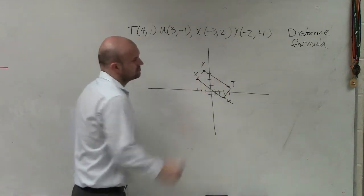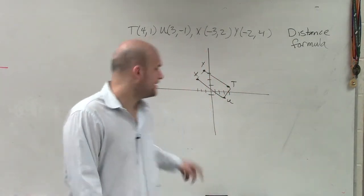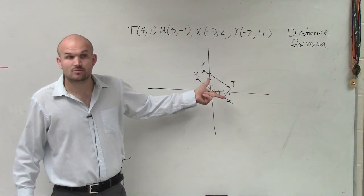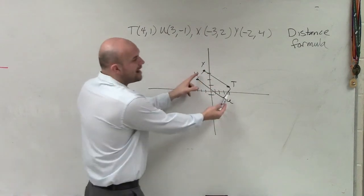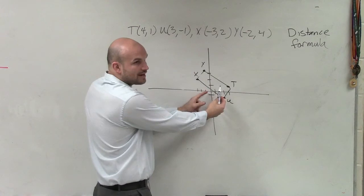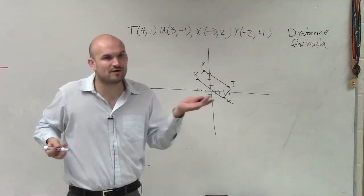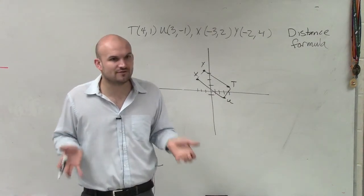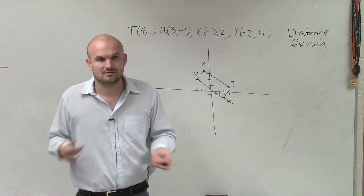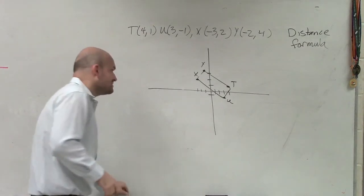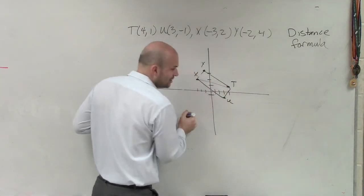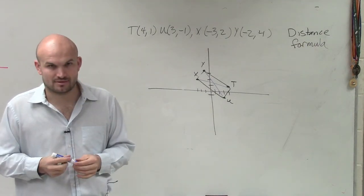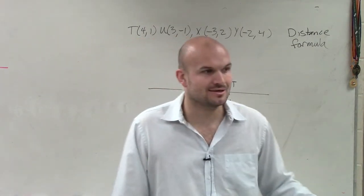Does it look like a rectangle? Yeah, it could look like one. Is it? I don't know. If I can show you these two sides are congruent and these two sides are congruent, is that going to tell me it's a rectangle? Well, will it tell me it's a parallelogram? Yeah, because opposite sides are equal for both. So what differentiates a rectangle from a parallelogram? As far as distance — because we have to use the distance formula — the diagonals. If we can show that this diagonal is congruent to that diagonal, then it has to be a rectangle. Only if the diagonals are congruent, because the diagonals are only congruent for a rectangle.